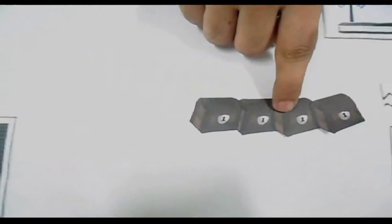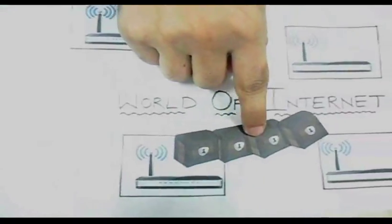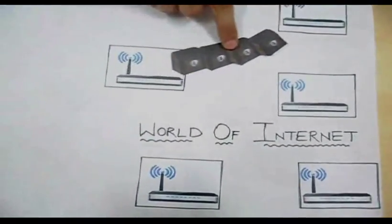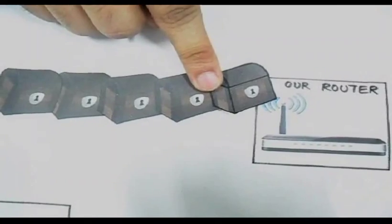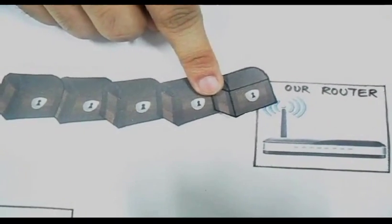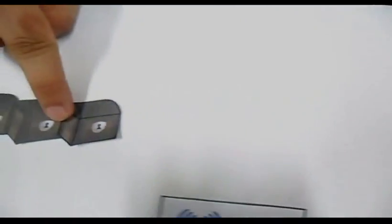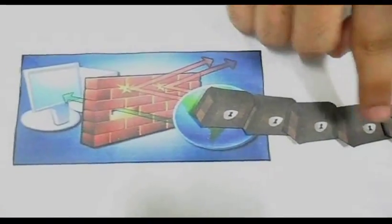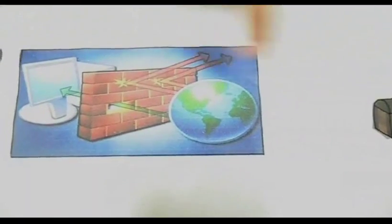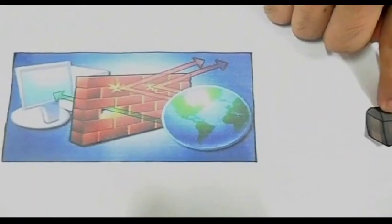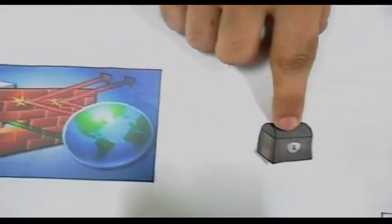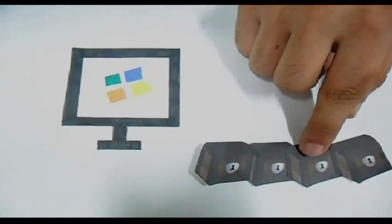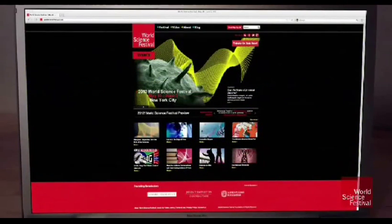These data packets then travel back to us through the world of the internet to our router. The data packets then again go to a firewall for checking for malware and viruses. A healthy data packet is able to pass through the firewall, whereas a data packet that contains a virus or malware is blocked by the firewall.